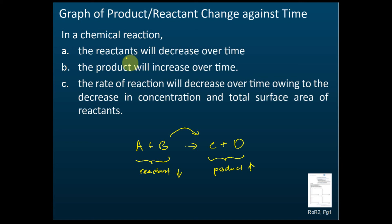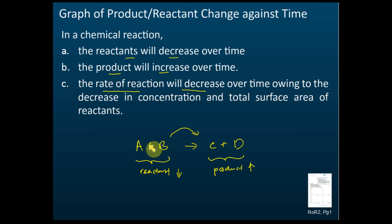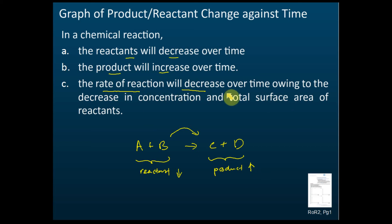So reactants decrease but products increase. Another important thing is that the rate of reaction also decreases over time. This is because, if it involves a solution, the concentration of the solution decreases as reactants are used up. If it involves a solid, the total surface area also decreases. So three things to know: reactants decrease, products increase, and rate of reaction decreases over time.